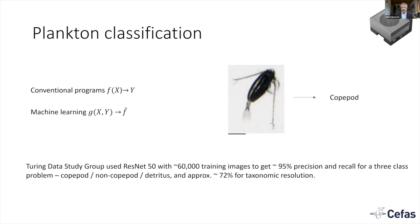As Sari said, the Turing Data Study Group came up with an algorithm able to differentiate between copepod, non-copepod, and detritus with something like 95% accuracy overall, and we've managed to get further improvement since. One thing we'd like is full taxonomic resolution — knowing not just that it's a copepod but what kind. At the moment we're only in the 70% region for that. Going forward, we're keen to roll out the existing algorithm for counting copepods and estimating density and abundance in real time on the ship, while also working with taxonomists to develop a much larger, more curated, higher-accuracy dataset to improve taxonomic resolution.